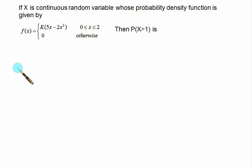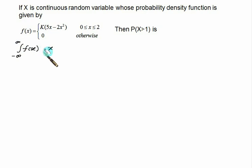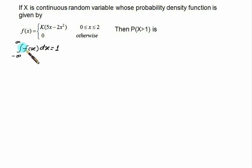In the next problem, f(x) = k(5x − 2x²) for 0 ≤ x ≤ 2, and we want to find P(x > 1). First we find the value of k using the property that the integral from minus infinity to infinity of f(x) dx must equal 1. Since the function is only defined for 0 to 2, we take that as our limit.